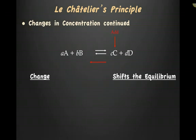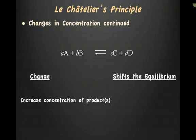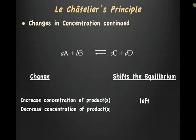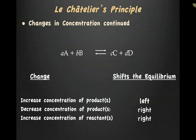What happens if we add some product to this system at equilibrium? If we add product, the equilibrium shifts to the left to get rid of it. What happens if we remove product? The equilibrium shifts to the right to replace it. What happens if we add reactant? We shift to the right to get rid of it. What happens if we remove reactant? We shift to the left to replace it.